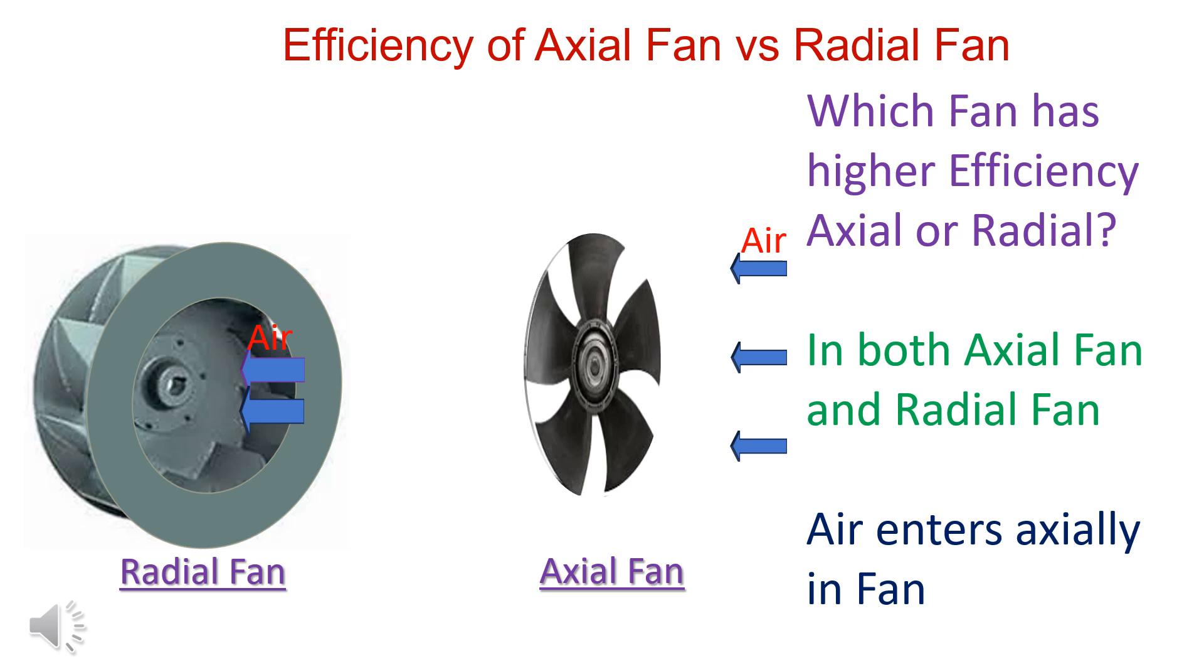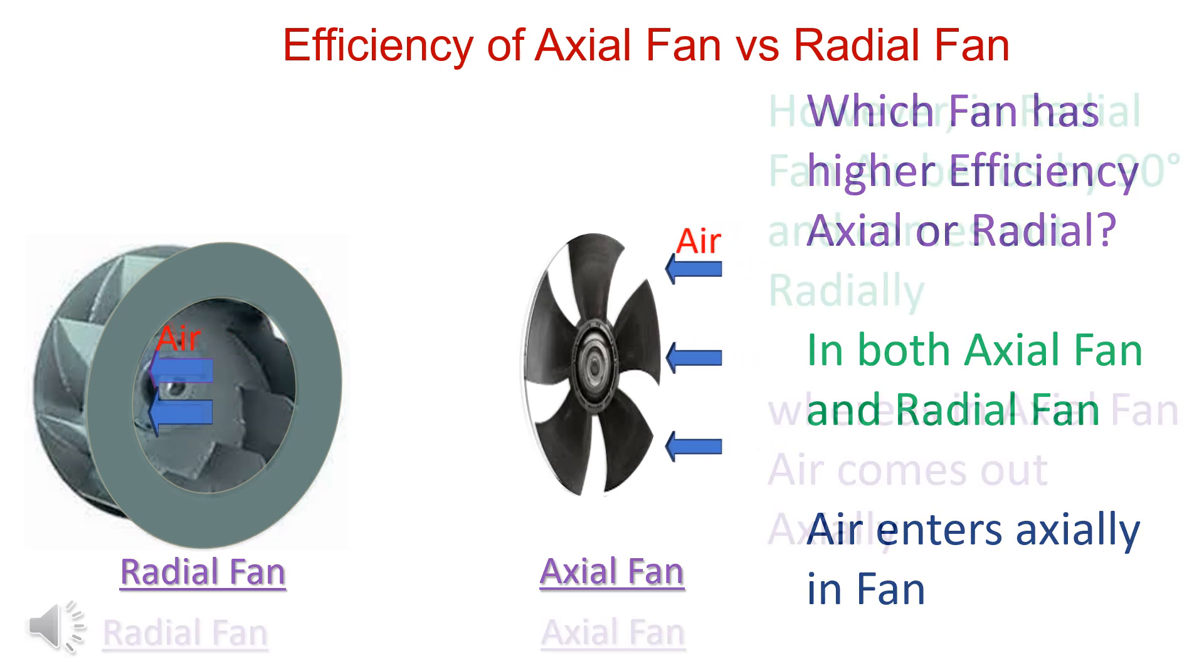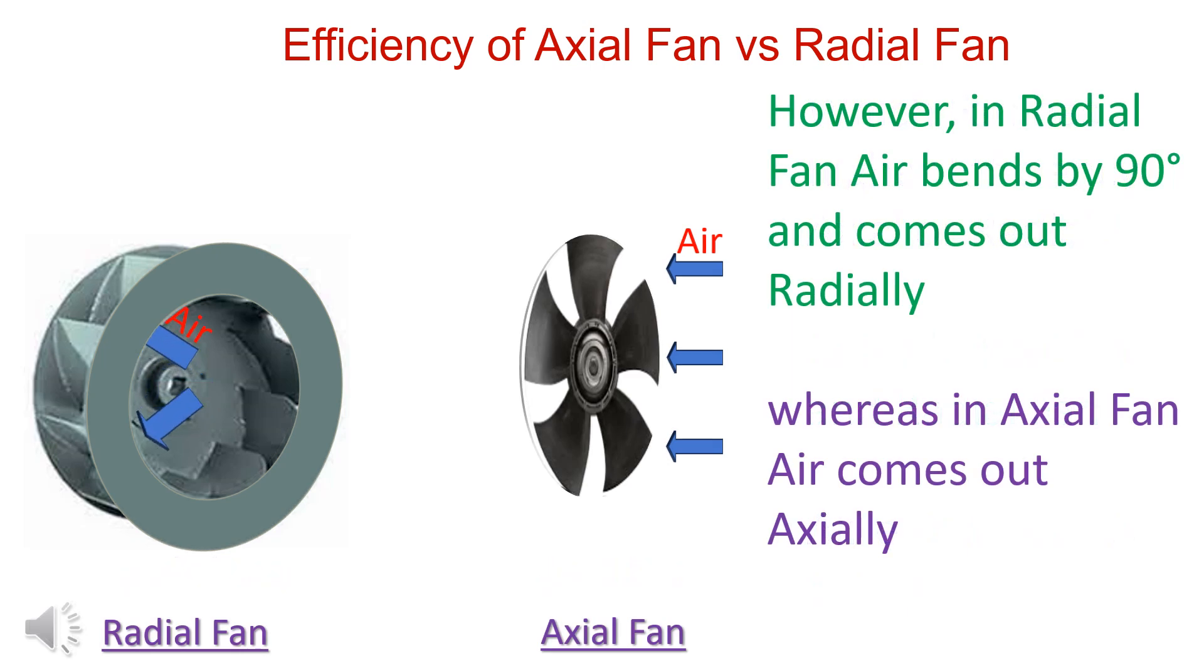In both axial and radial fan, air enters axially. In the radial fan, air bends by 90 degrees before it comes out radially. In the axial fan, air comes out axially.